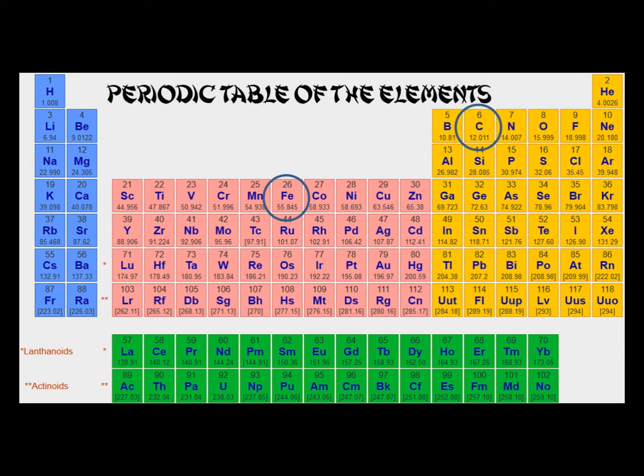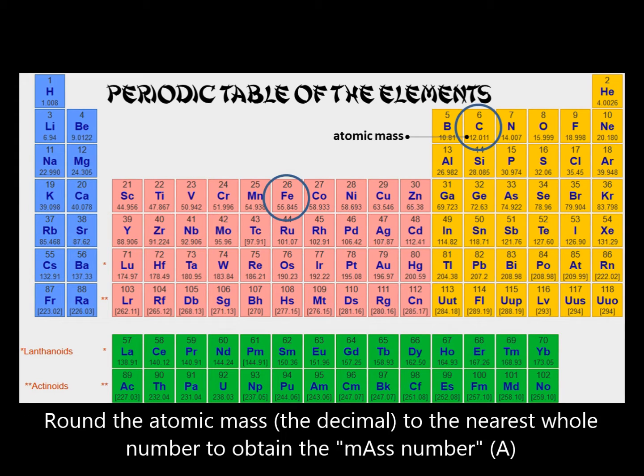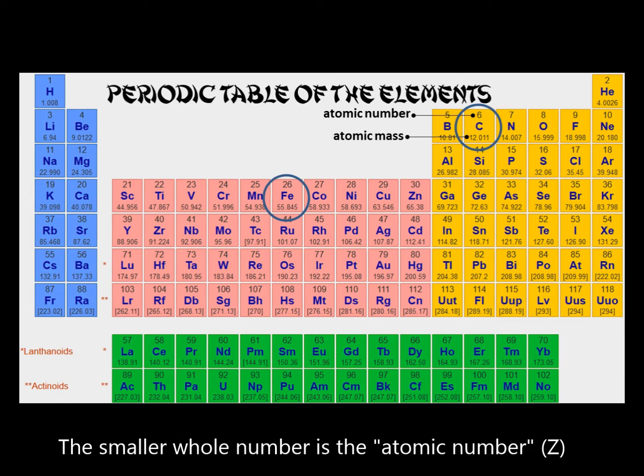The periodic table also provides us with two numbers, important in determining the number of subatomic particles. The larger decimal number is the atomic mass of that element. When rounded to the nearest whole number, the atomic mass is called the mass number and is represented by the letter A. The smaller whole number is the atomic number of that element and is represented by the letter Z.